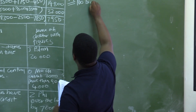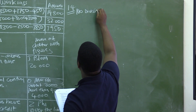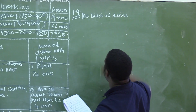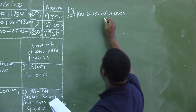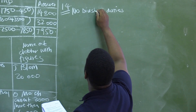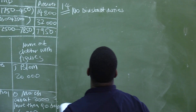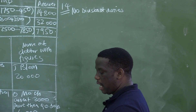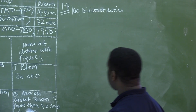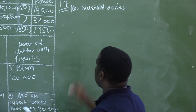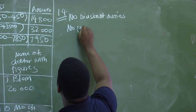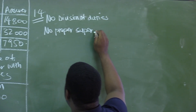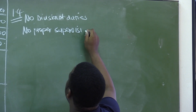What we are noting here is that there is no division of duties. This could lead to fraud — we cannot have one person doing many different tasks. There is no division of duties, and there is also no proper supervision over this person.